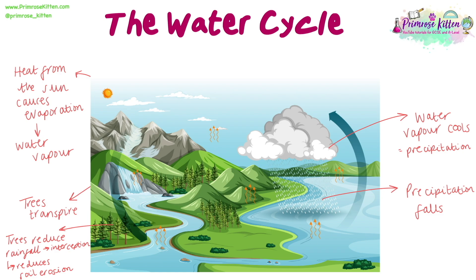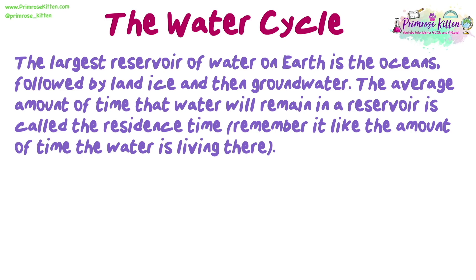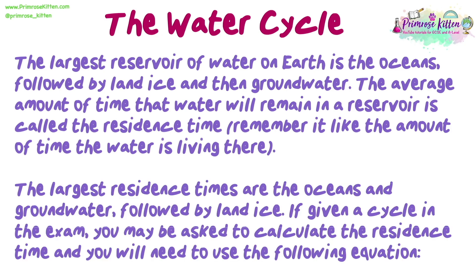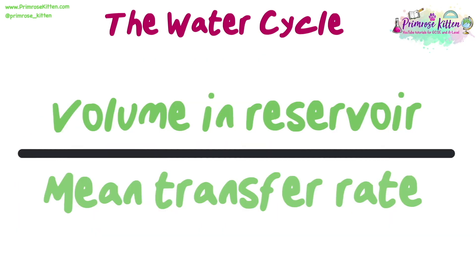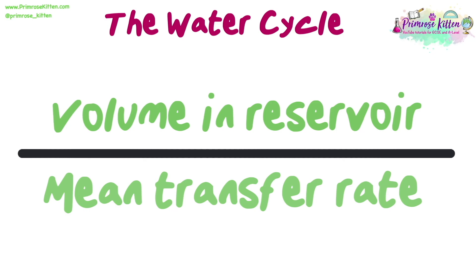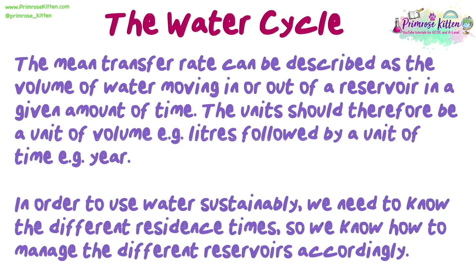You could also be asked about some of the reservoirs in the cycle. Remember, a reservoir can be defined as a store of water. The largest reservoir of water on earth is the oceans, followed by land ice and then groundwater. The average amount of time that water will remain in a reservoir is called the residence time — remember it as the amount of time the water is living there. The largest residence times are the oceans and groundwater, followed by land ice. If given a cycle in the exam, you may be asked to calculate the residence time using the following equation: the volume in the reservoir divided by the mean transfer rate. The mean transfer rate is the volume of water moving in or out of the reservoir in a given amount of time. The unit should be a unit of volume, for example litres, followed by a unit of time, like a year. In order to use water sustainably, we need to know the different residence times so we know how to manage the different reservoirs accordingly.